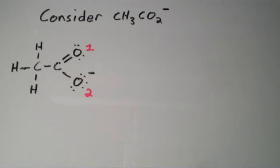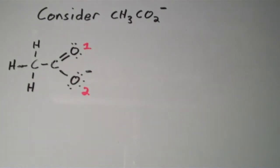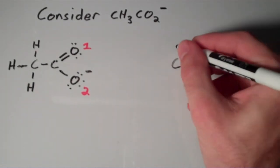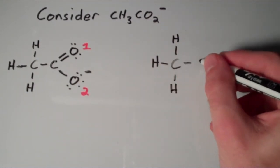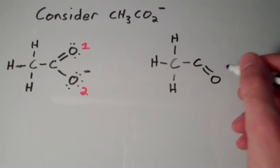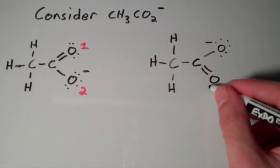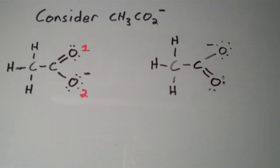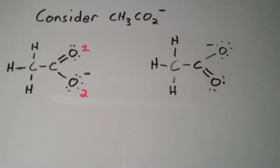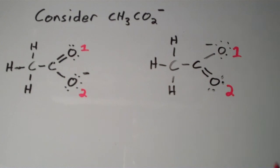So really what's going on is there's another contributing structure. This structure doesn't really tell the whole story. And that other contributing structure looks like this. Notice now the oxygen one is the one with the single bond and the negative charge. While oxygen two is now the one that has the zero charge and the double bond.